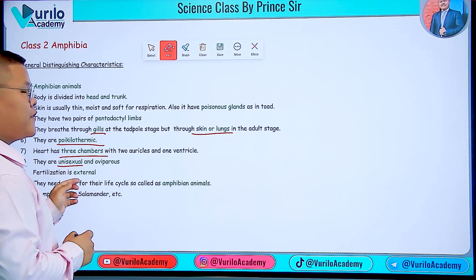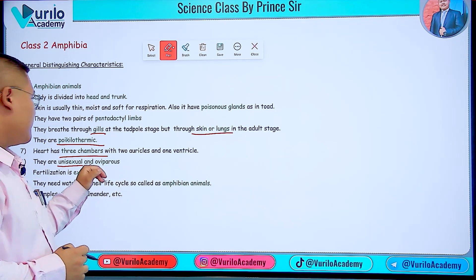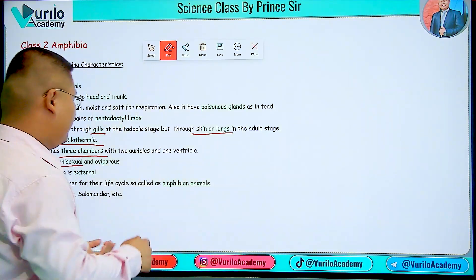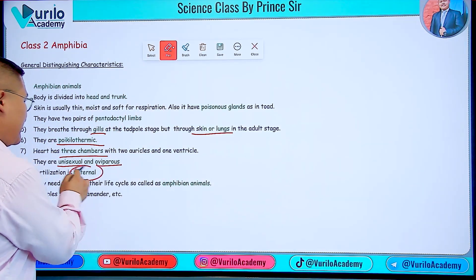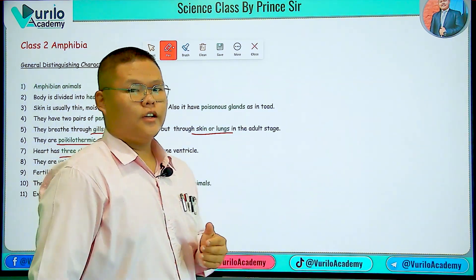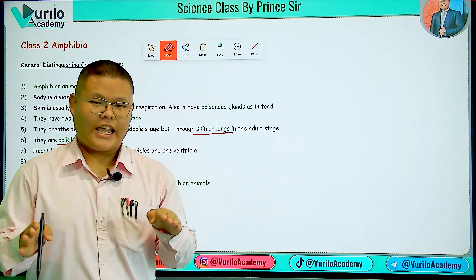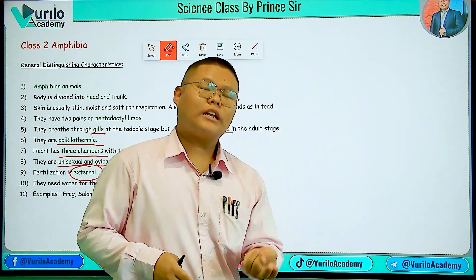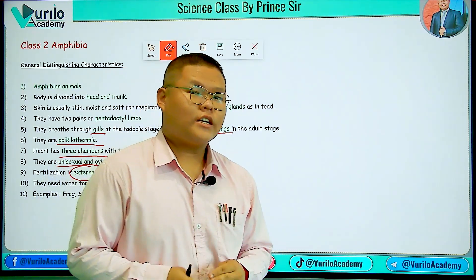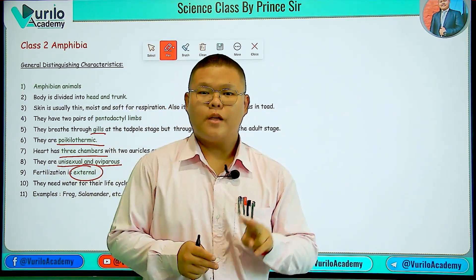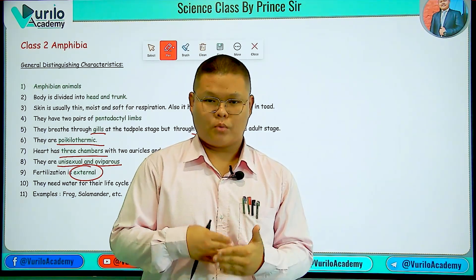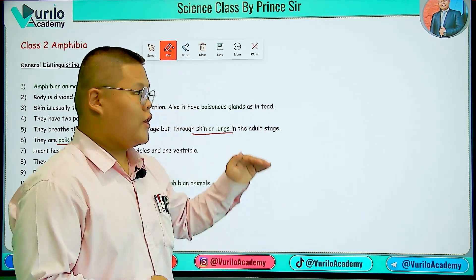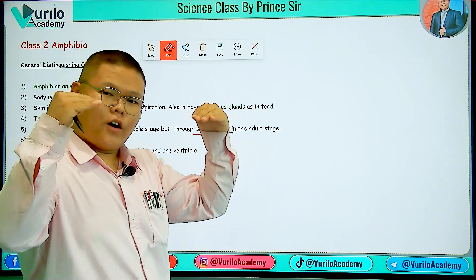Amphibians are unisexual — either male or female. They are oviparous, meaning they lay eggs. Fertilization is external — the male and female frog mate in water, eggs and sperm are released into the water, and fertilization occurs in the external environment.